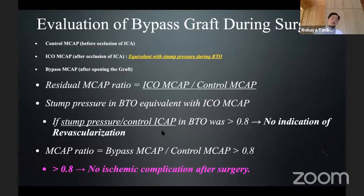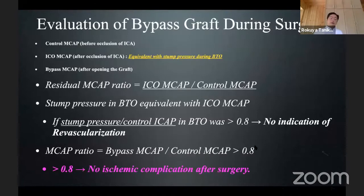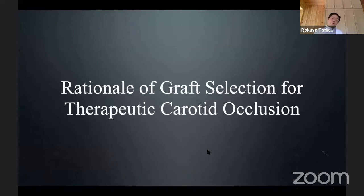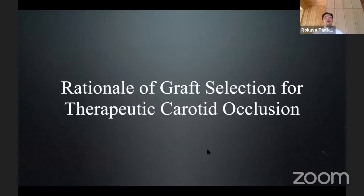In the balloon test occlusion, if the stump pressure is more than 0.8 we have no surgical indication. But in almost all cases the stump pressure is less than 0.8, so we need some form of revascularization. So how can we determine the graft size for therapeutic carotid occlusion?